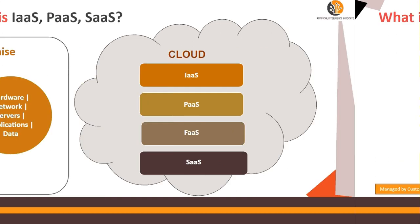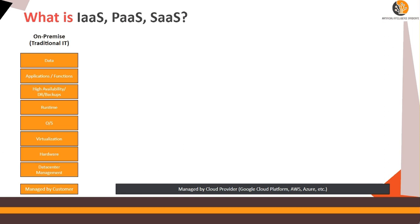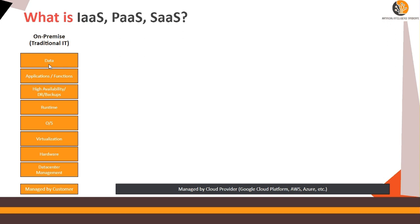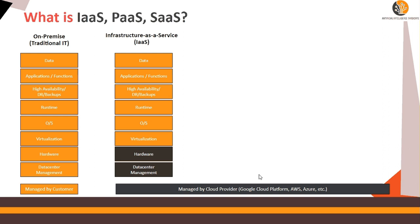When you have on-prem bare metal, you need to take care of everything: data center management, hardware, virtualization, OS, runtime, backups, applications, functions, and data — the whole nine yards. Cloud providers like Google Cloud, AWS, or Azure provide different categories of workload offloading to the cloud.